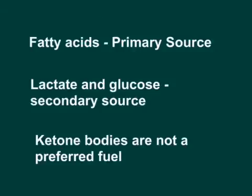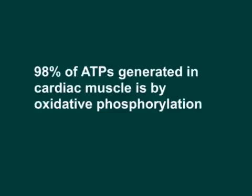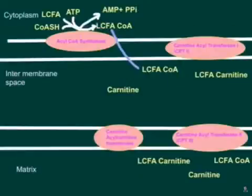98 percent of the ATPs generated in cardiac tissue come from oxidative phosphorylation, also referred to as the electron transport chain, which needs oxygen to function. This means 98 percent of the ATPs are generated in the presence of oxygen, making cardiac tissue almost entirely an aerobic tissue — it needs oxygen for its metabolism.